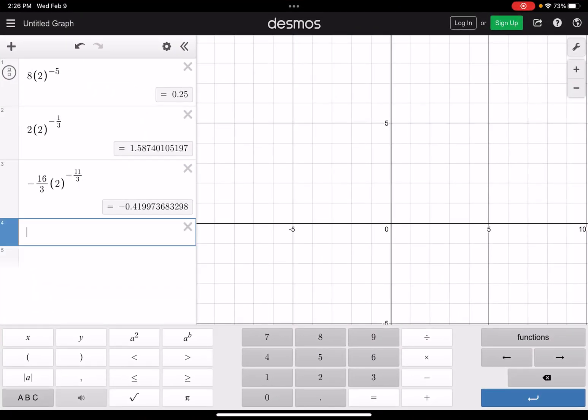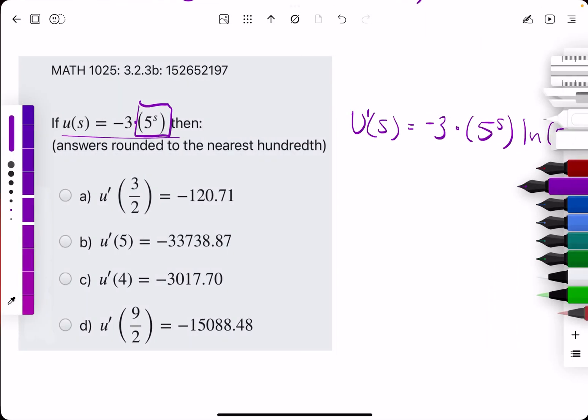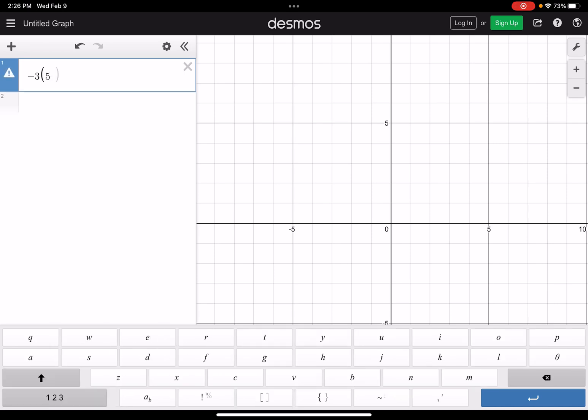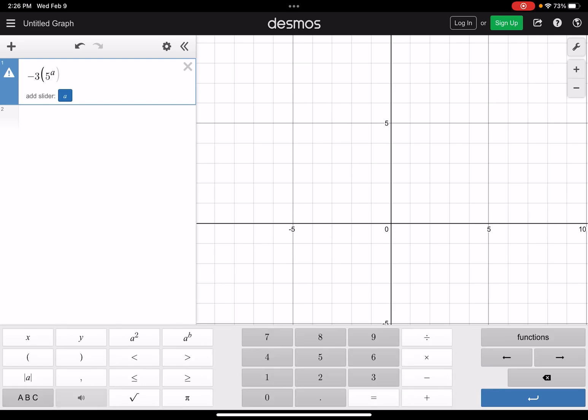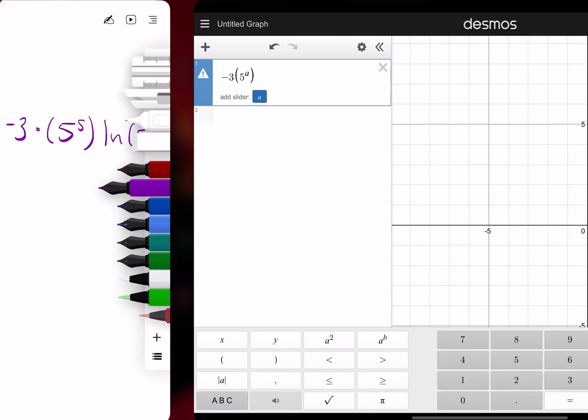but really if you can set it up, I would highly recommend using Excel for this because you can type it in once, and we may even be able to use like a slider for this one. And we'll talk about how that works. So we have 5 to the s and then ln of 5.